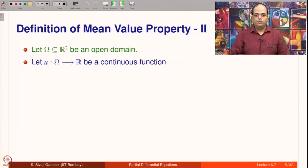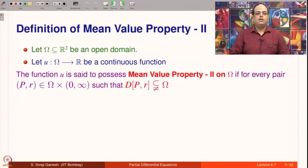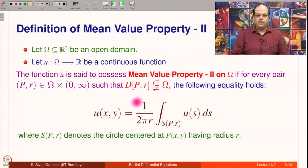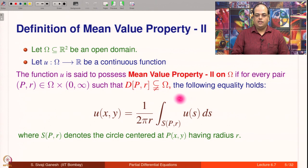Definition of mean value property 2: let omega be an open domain in R² and let U be a continuous function on omega. The function is said to possess mean value property 2 if for every point P in omega and every R positive such that the closed disc is contained in omega, U of P equals the integral of U over the circle S(P,R) divided by the perimeter of the circle. In other words, the mean value of U on the circle equals the value of U at the center.